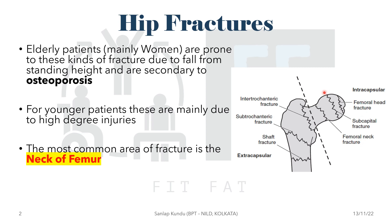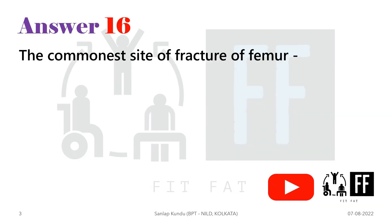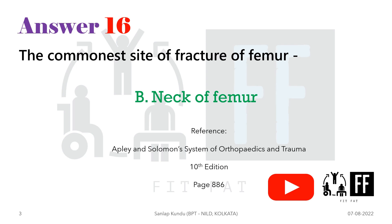Whenever there is an intracapsular fracture, it is most likely to lead to avascular necrosis of the femur, and the mortality rate is high in the older population from this kind of fracture. So the answer is Option B — the neck of femur. This can be found in any orthopedics book; specifically, Apley and Solomon's orthopedic book was referenced here.